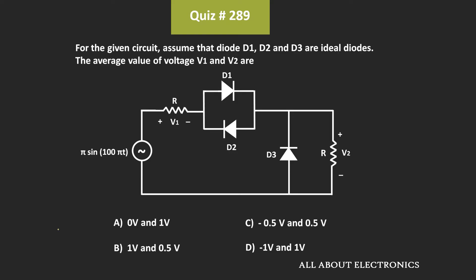Hey friends, welcome to the YouTube channel all about electronics. In this question, we have been given a circuit and we have been asked to find the average value of the voltage V1 and V2. We have been given that diodes D1, D2, and D3 are ideal diodes.